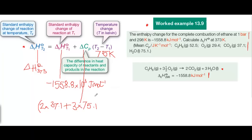Now the reactants, and we've got one ethane, so that's just 52.5. And we've got 3.5 oxygens, and that is 29.4. So that's done the Cp values. They're all in the same units, joules per Kelvin per mole. And now you can see why we needed to convert the kilojoules per mole to joules per mole.